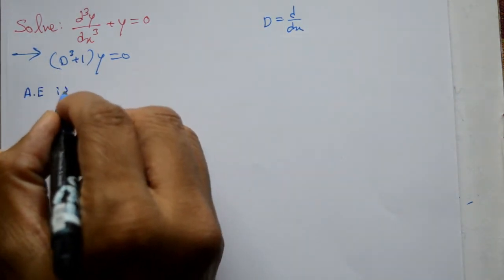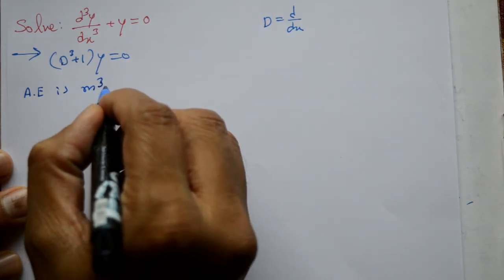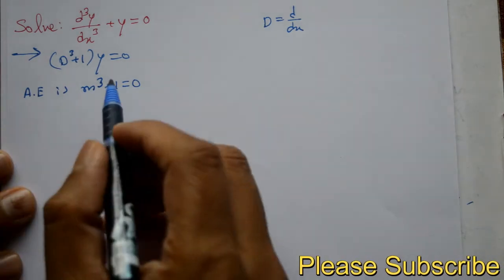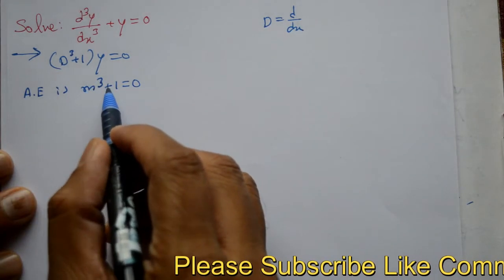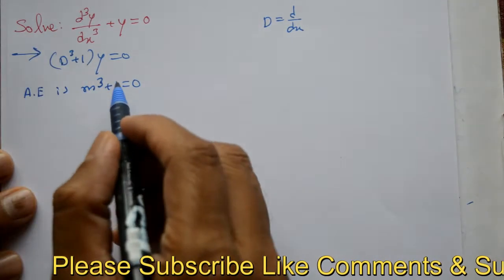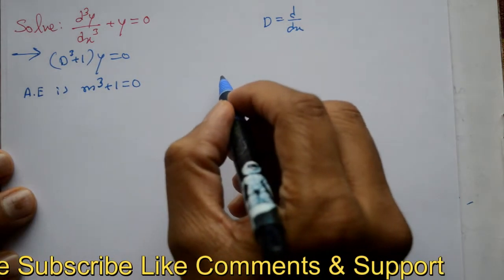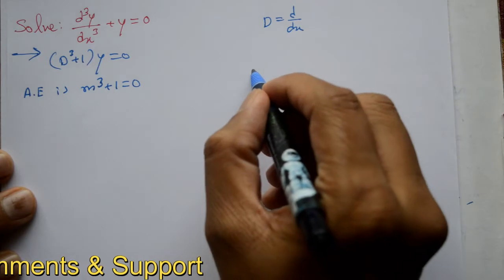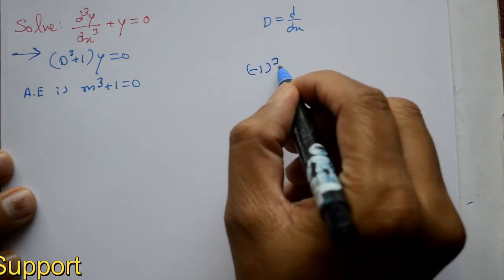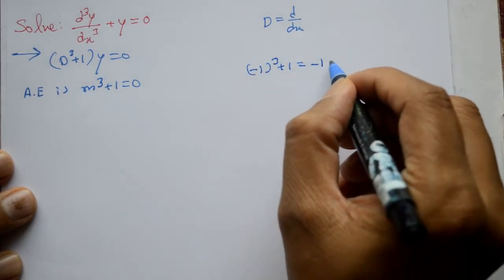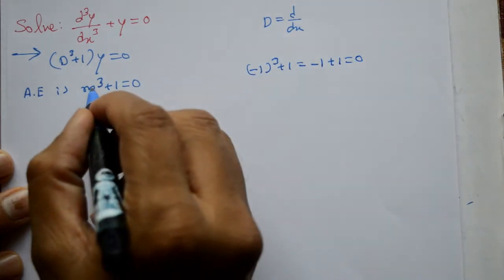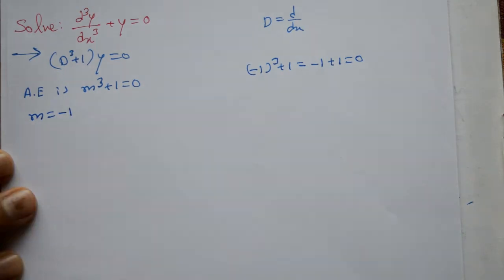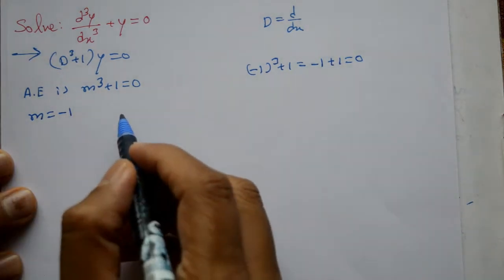Now, auxiliary equation is m³ + 1 = 0. So, kya ndalna hai? m is equal to -1 ndalna hai is me. Agar minus 1 ndalna to (-1)³ + 1. So, minus 1 cube become minus 1 plus 1 that equal to 0. Agar minus 1 ndalna to yadar 0 aayega. Humko ek root mil gaya. m = -1 mil gaya. Ok. Is a root by inspection.